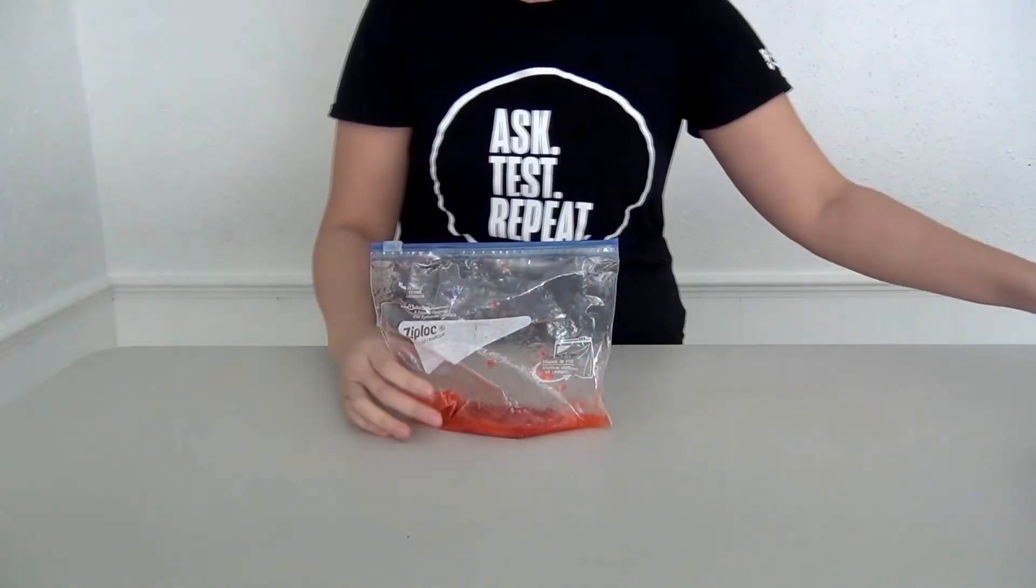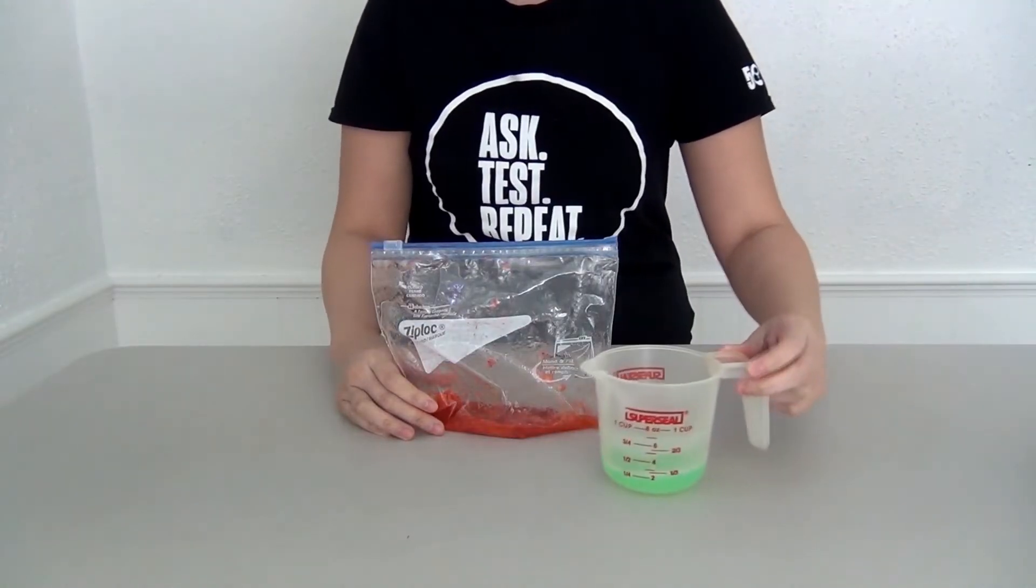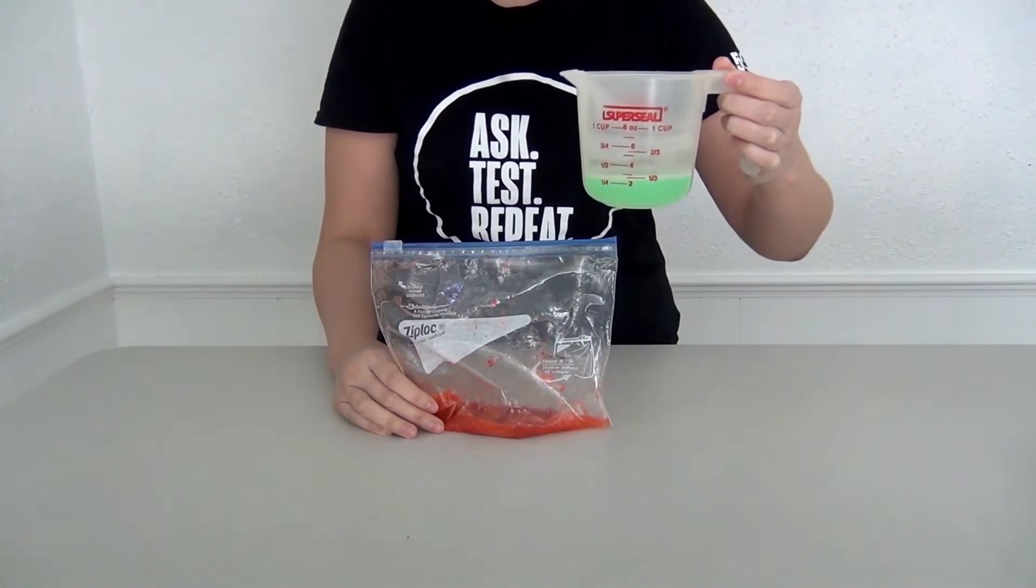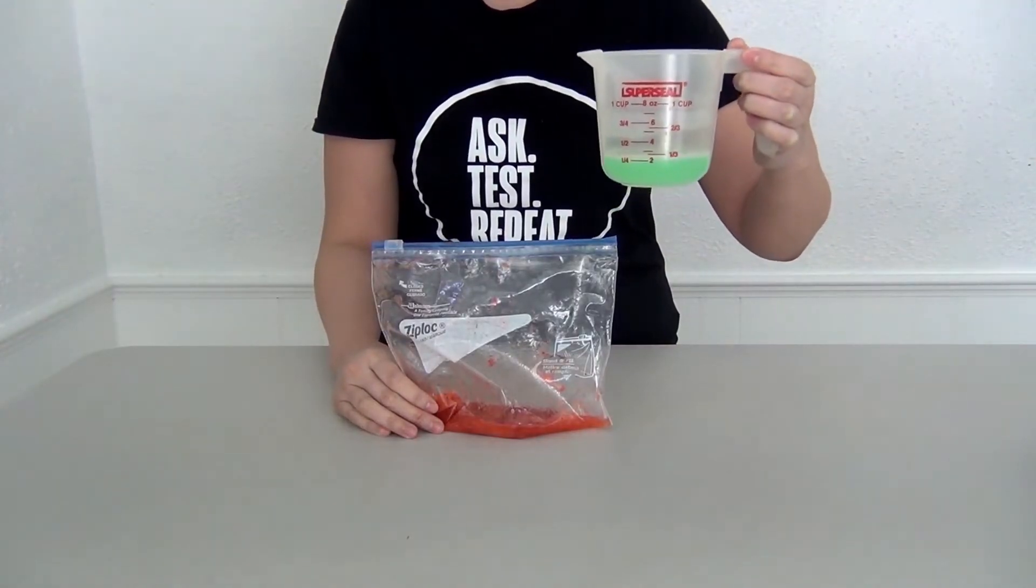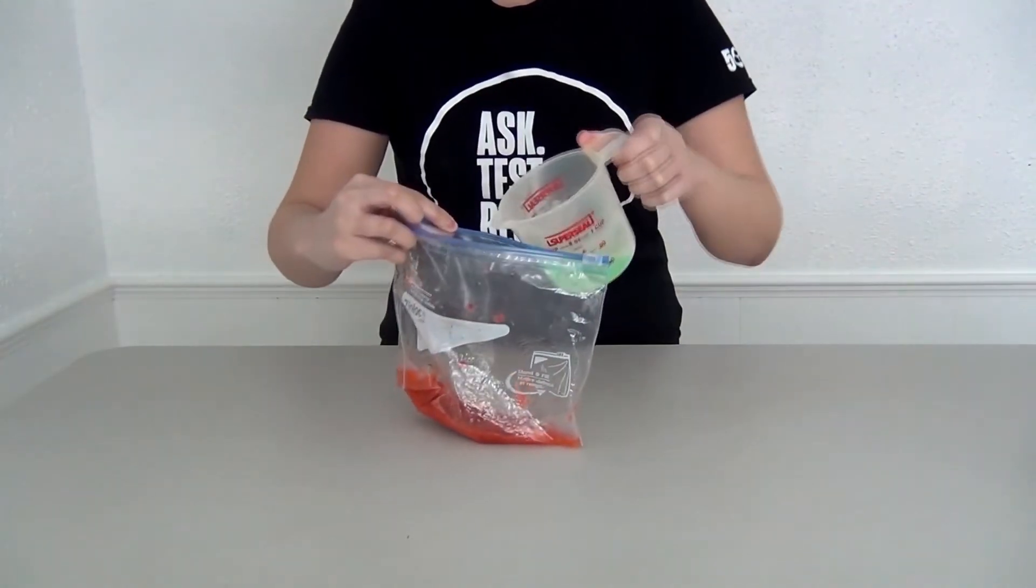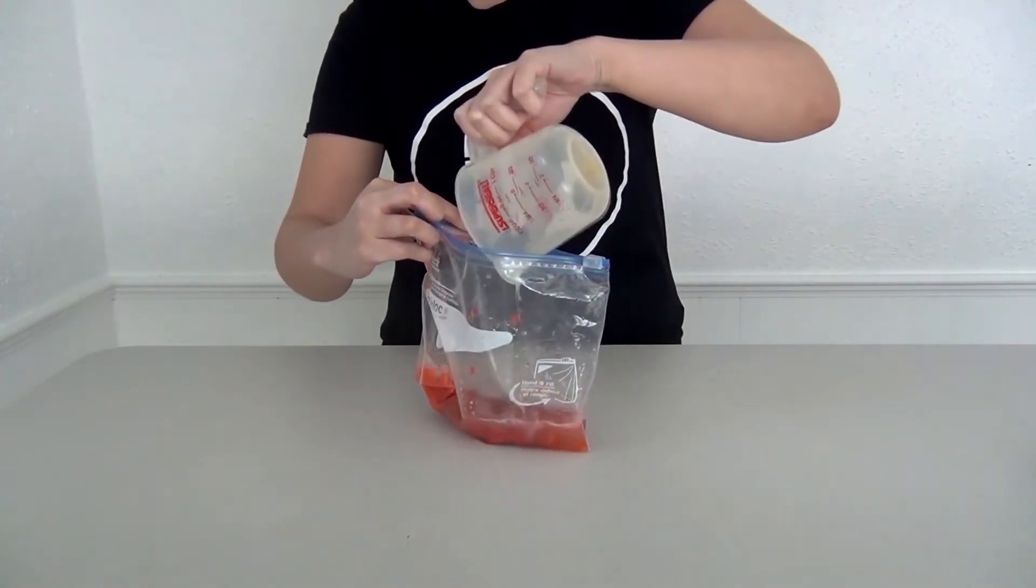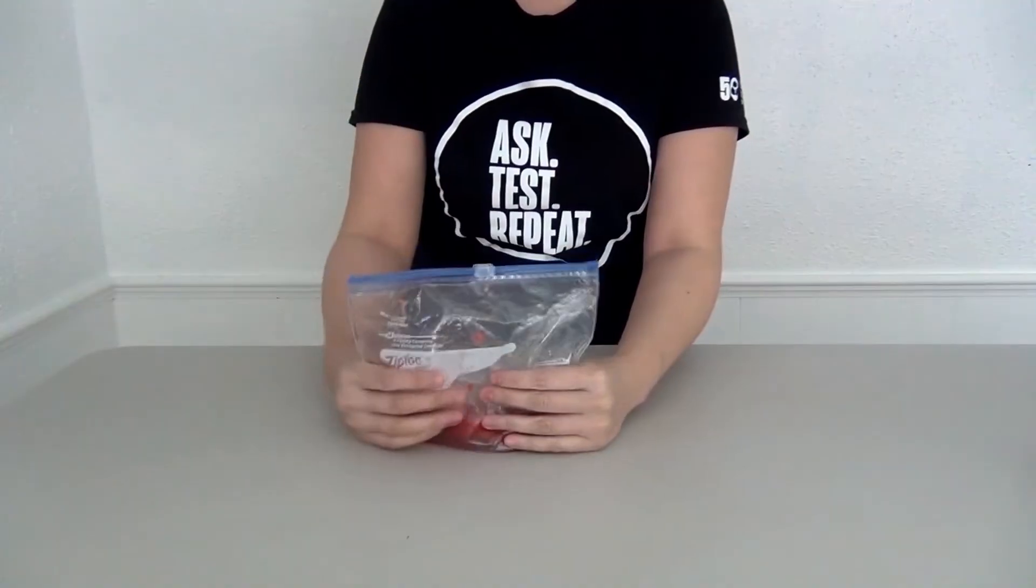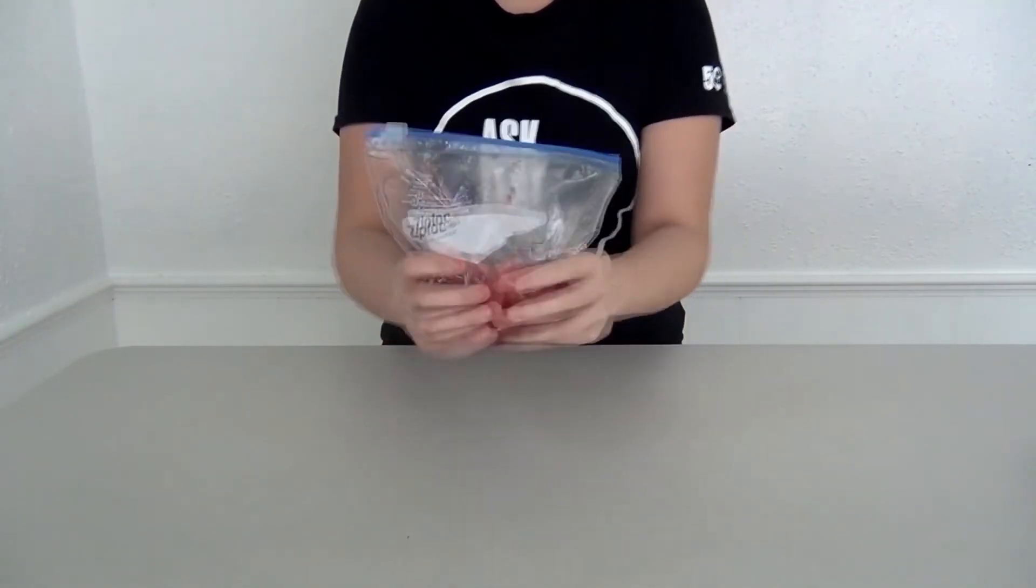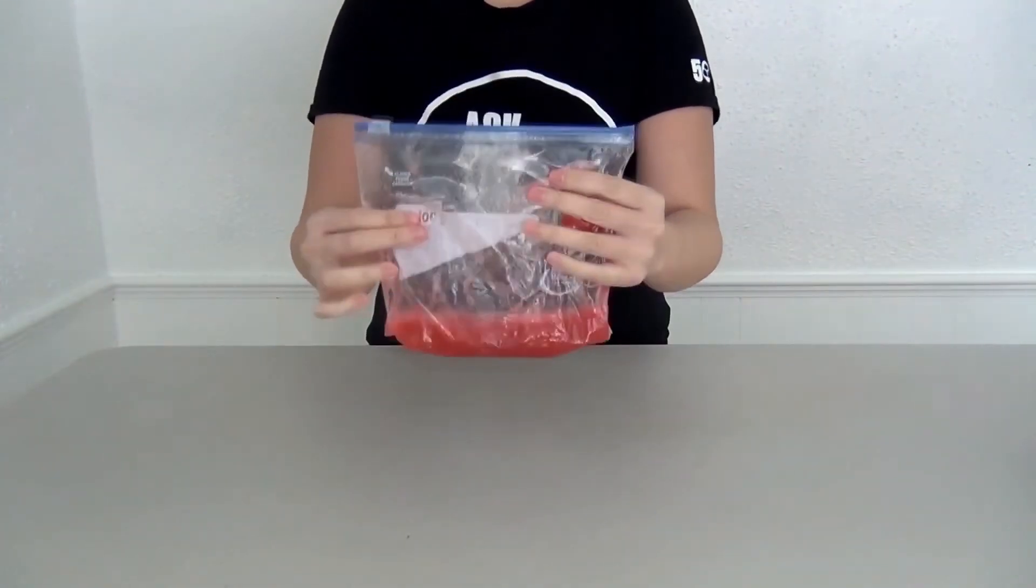Next, what you want to do is to get your measuring cup and measure out a quarter cup of water and add one teaspoon of salt and one teaspoon of soap to that mixture. You can see I've already measured that. Pour that mixture into the bag. Close it up again, taking out the air. You want to mix this together. Looks good.